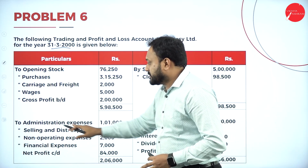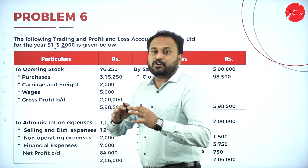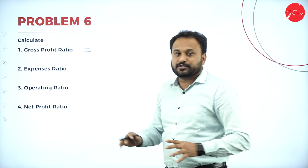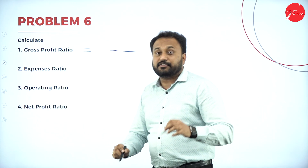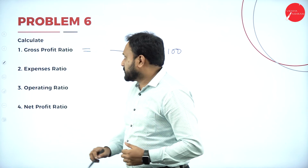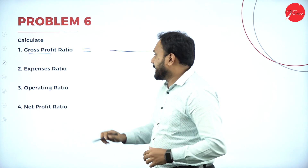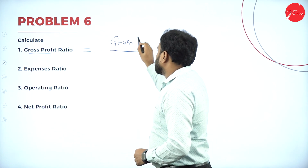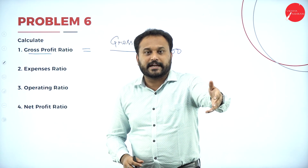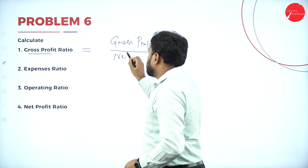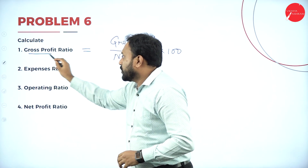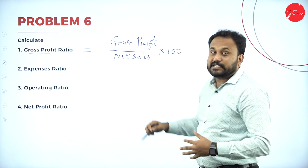I haven't looked at the question yet — I'll go with the formulas first, and that is the Abhilash Chandra trick. Gross Profit Ratio is equal to — remember the numerator-denominator combination, multiplied by 100, because all these are percentages. Gross profit is determined by one particular aspect: how much is your sales. So, Gross Profit Ratio = Gross Profit divided by Net Sales, into 100.